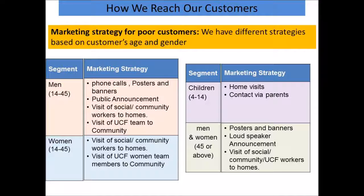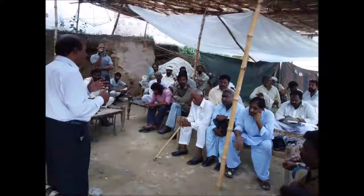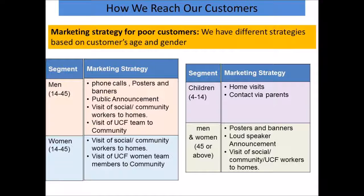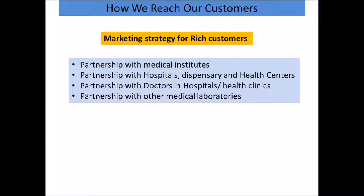We have two different marketing strategies for rich and poor customers. For poor customers, we segment by age and gender — for women, children, and men we use different strategies. We go to homes, make phone calls, use posters and banners, make public announcements, and conduct meetings with community elders to convince them to visit our medical camps along with their families. For rich customers, we make partnerships with hospitals, dispensaries, health centers, doctors, paramedical staff, and other medical laboratories, who refer patients to our lab.